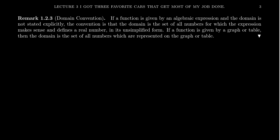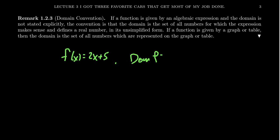When a function is defined algebraically, we follow the following domain convention. If a function is given by an algebraic expression and the domain is not stated explicitly — for example, F of X equals 2X plus 5 with no specified domain — we follow this convention: the domain is the set of all real numbers for which the expression makes sense and defines a real number in its unsimplified form.